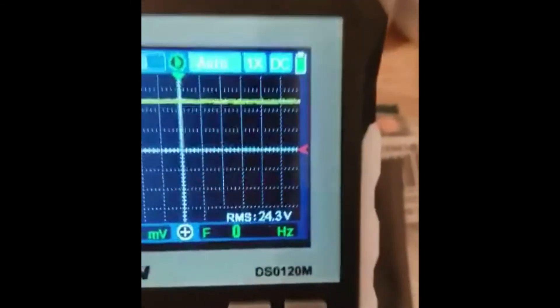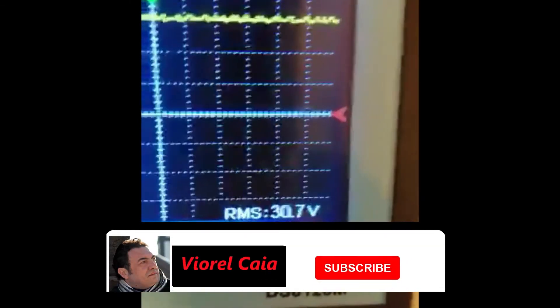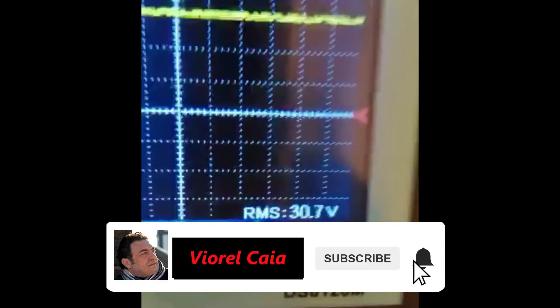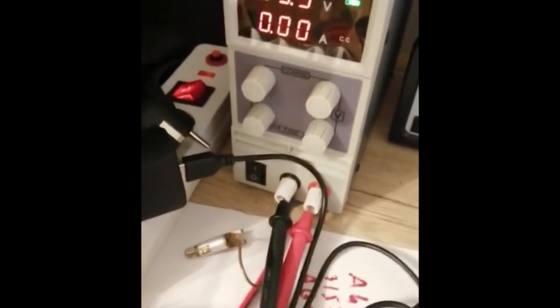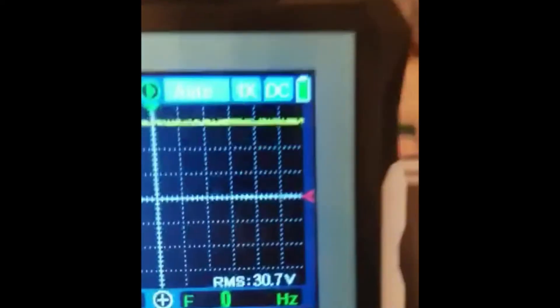it's also respecting the proportion, because we have around 9% difference. If we count 1.3 mega ohms and we have 130 kilo ohms here, it's like almost 10% from the resistance.